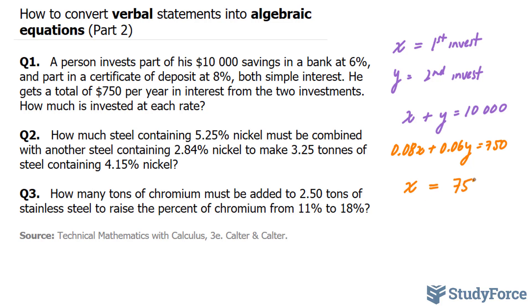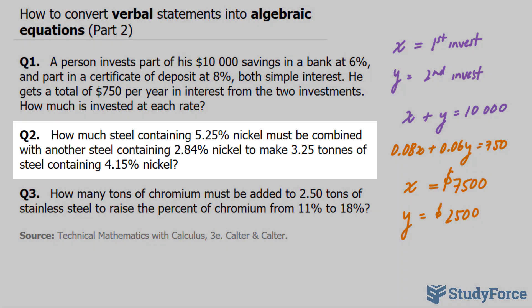7,500 for the one that was 8% interest and 2,500 for the one at 0.06% interest. And like I mentioned earlier, these can be found using elimination, substitution, or even any calculator that has the ability to solve linear systems.